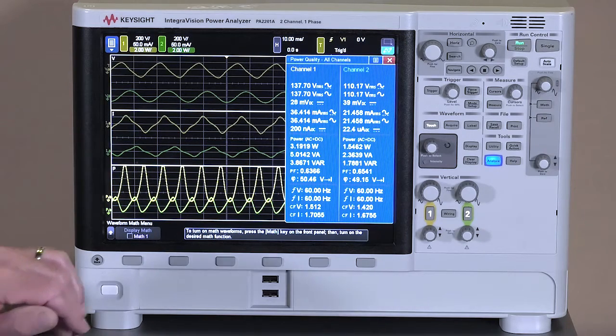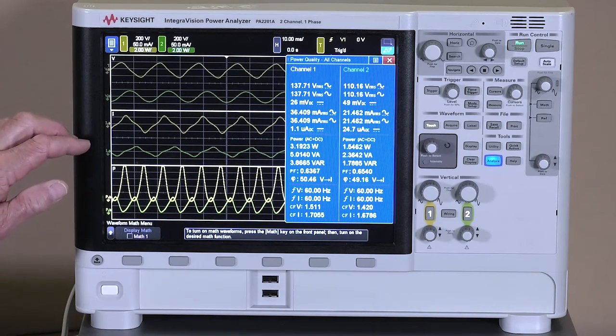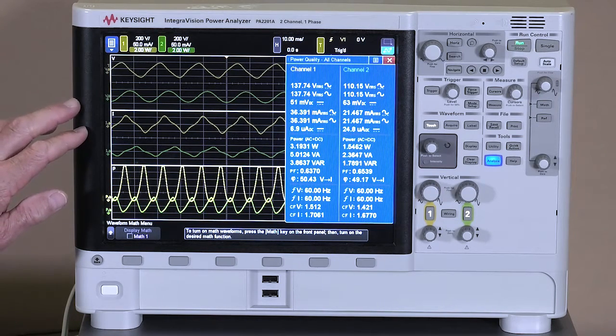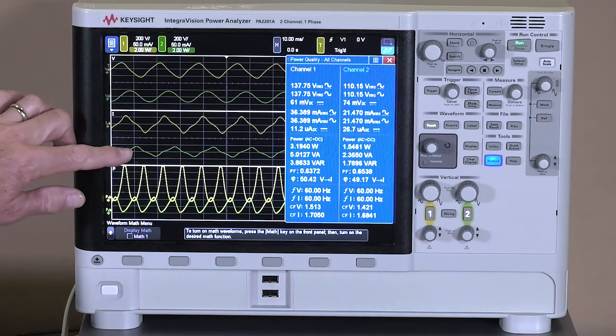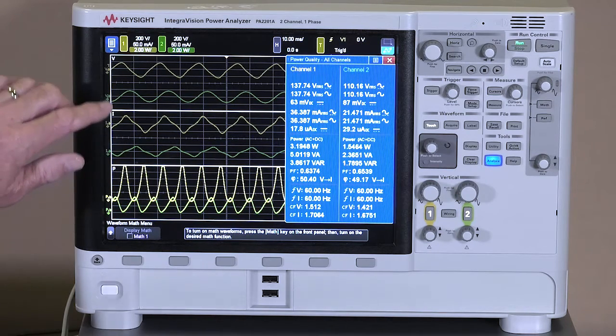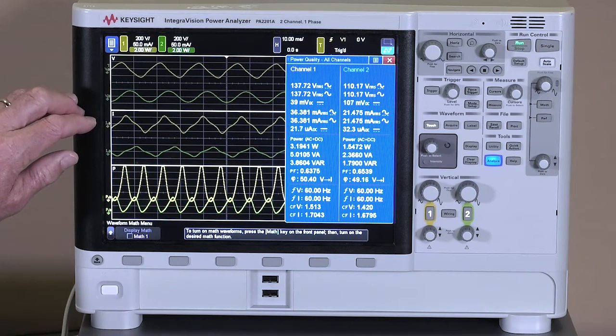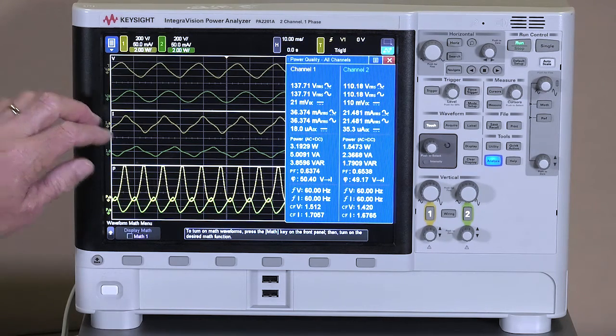One other interesting thing is when we first looked at the power measurements on our AC source, we noticed the motor has a pretty good power factor at 95%. What that means is when you add these two currents together, it should be right on top of our voltage measurement with no difference in phase.